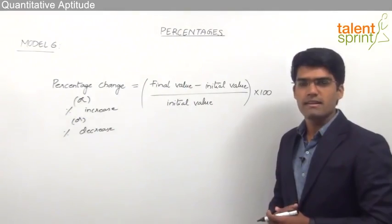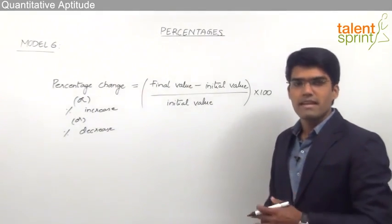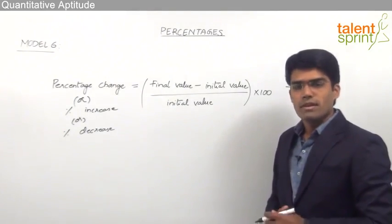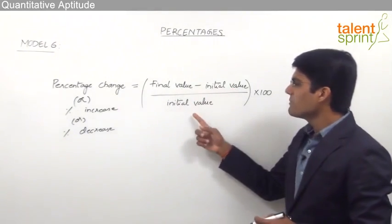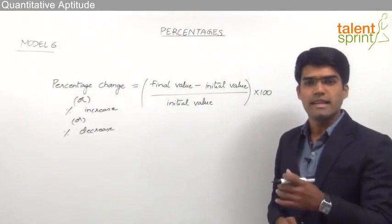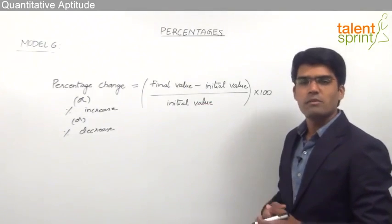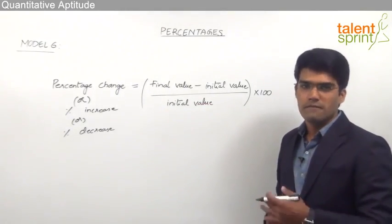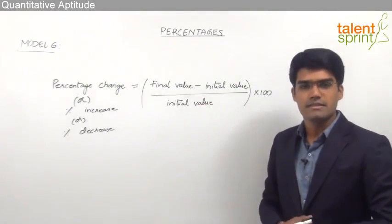That can be decided based on the sign of the value. For example, sometimes when we take final minus initial by initial into 100, we may get a negative answer. That negative sign indicates that the change is a decrease. Whatever value we get should be taken as a percentage decrease.